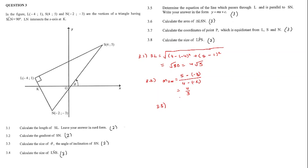Question 3.3. Calculate the size of theta, the angle of inclination of SN. To get our angle of inclination, we know that M is equal to tan theta. Therefore, tan theta is equal to 4 over 3, and theta is equal to 53.13 degrees.